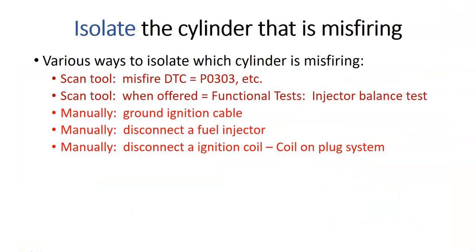Let's discuss a few methods of how to isolate a cylinder that is misfiring. We can sometimes use a scan tool, which we'll demonstrate first, or we might have to manually disconnect a spark plug cable and ground it, disconnect a fuel injector, or disconnect an ignition coil to confirm which cylinder has the misfire condition.